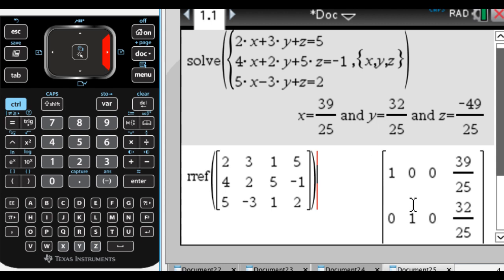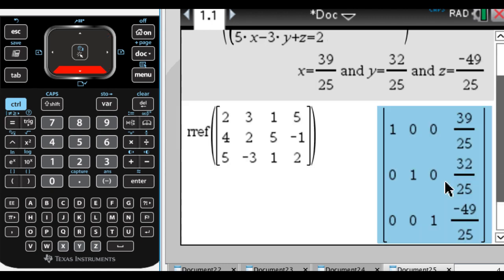In the second row, which, second column rather, I don't know if I said row or column here, I should have said column. In the second column here, I have a 1 in the y column, and then that's going to be 32 over 25. And then if I scroll down, I'm definitely going to have a 1 in the z column, and I'm also going to see negative 49 over 25.